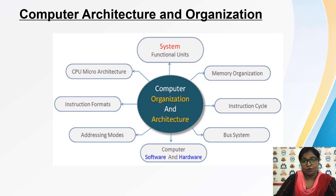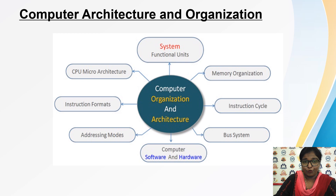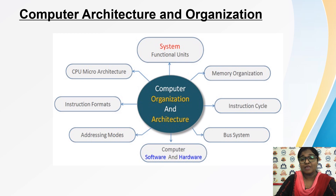The overall content of the subject is based on this diagram. You should know the functional units of the computer system — the various components: input devices, output devices, and your CPU. Inside the CPU, we'll cover the working, then how many memory devices are there, and how these memories are organized so that you can store your data and the CPU can fetch data and instructions and execute them.